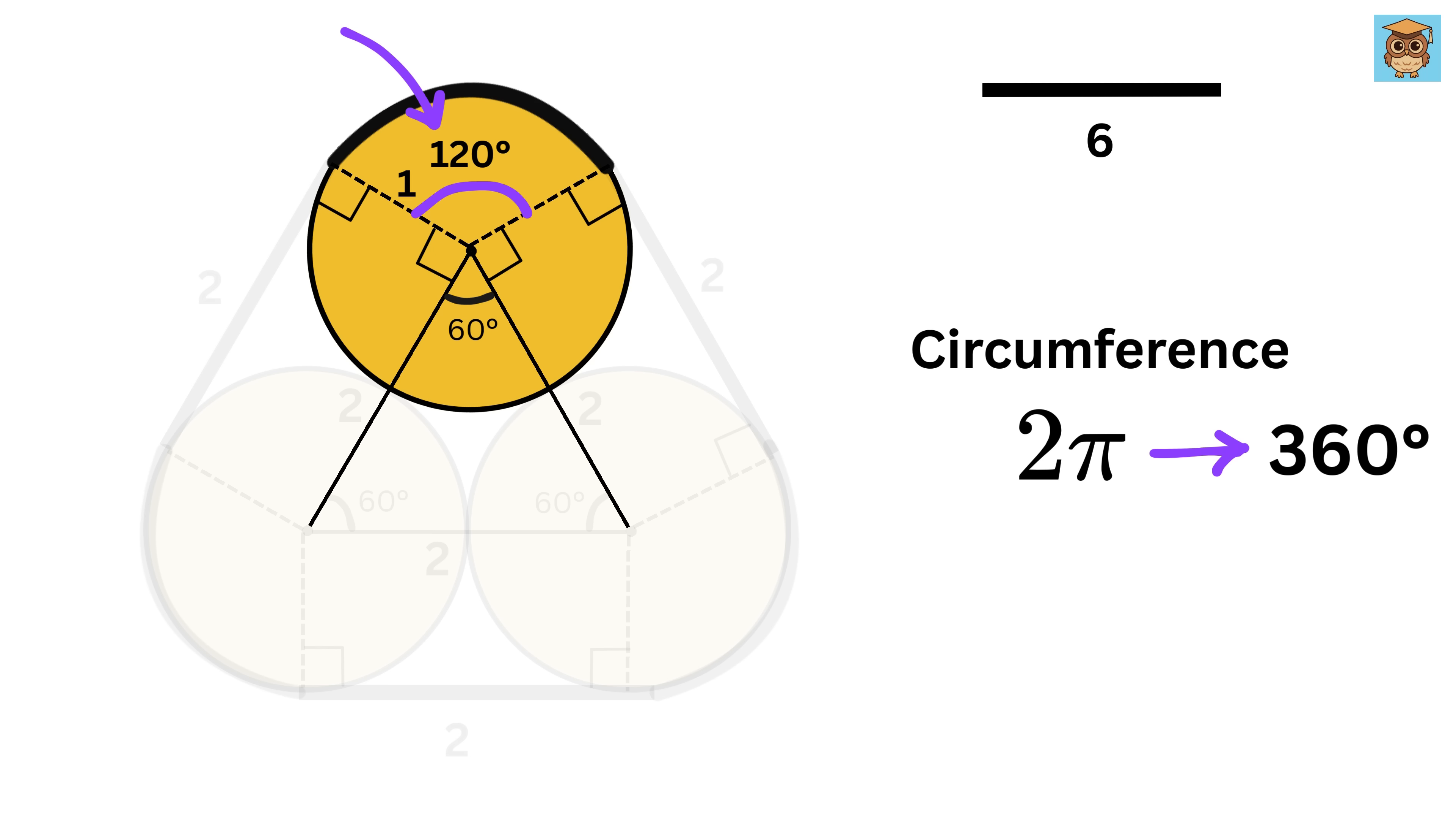If full circle or 360 degrees equals 2π units, then what do you think will be the length of 120 degree curved part of the circle? That's easy: it will be 120 over 360 times 2π, or 2π over 3.